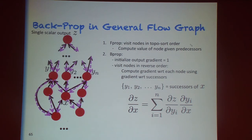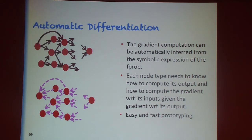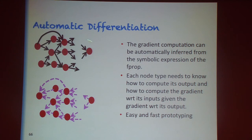The computation for computing gradients is essentially a transpose of the forward computation, proving that if the forward pass takes order-n computation, the gradient computation also takes order-n. In fact, this computation of gradients can be made completely automatic using automatic differentiation — tools that take a symbolic representation of your computation and produce another graph which computes the gradients, useful for debugging, prototyping, and avoiding manual errors.